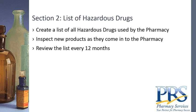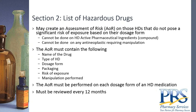Section 2 requires you to make a list of all hazardous drugs in the pharmacy. You take a look at your inventory, compare it to the NIOSH list, and inspect new products as they come in to check whether they are on the NIOSH list or structurally similar to something on it. You want to review that list at least every 12 months to ensure nothing has been missed.